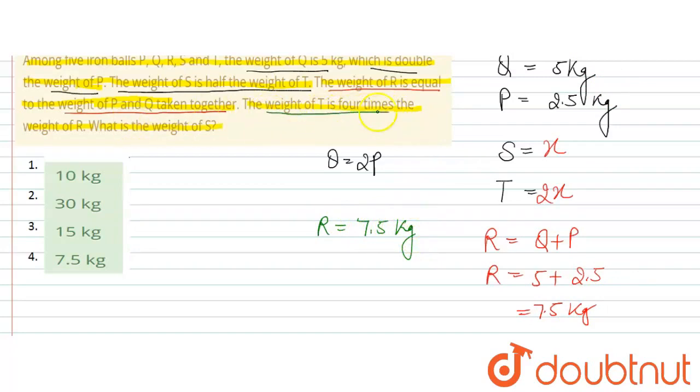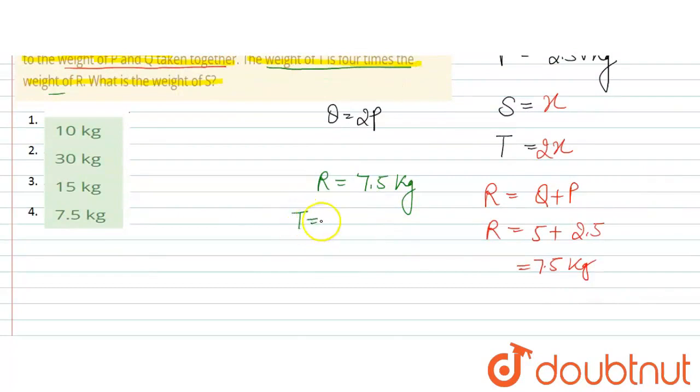So next given is, weight of T is 4 times weight of R. So T's weight is equal to 4 multiplied by 7.5. So this would go up to 45.